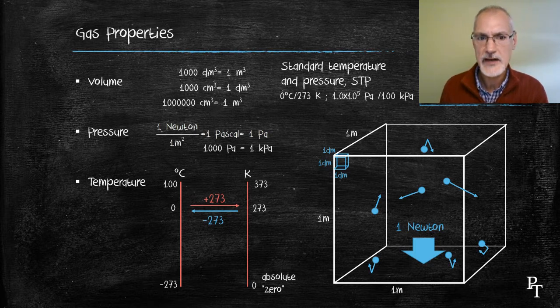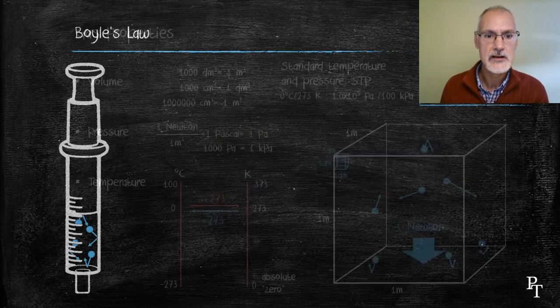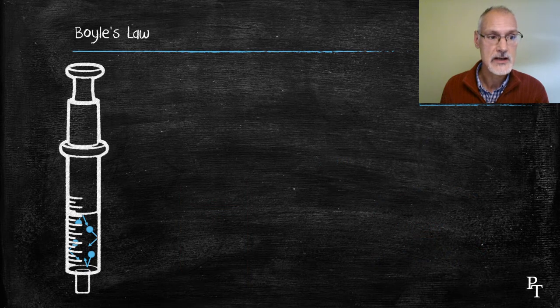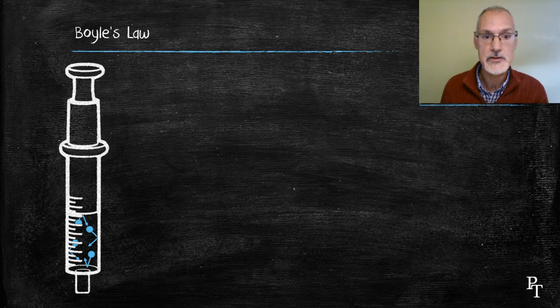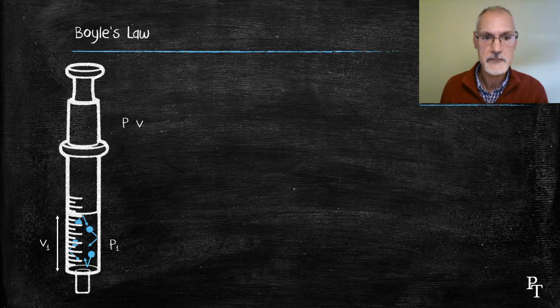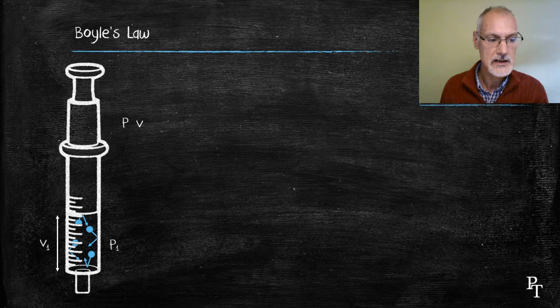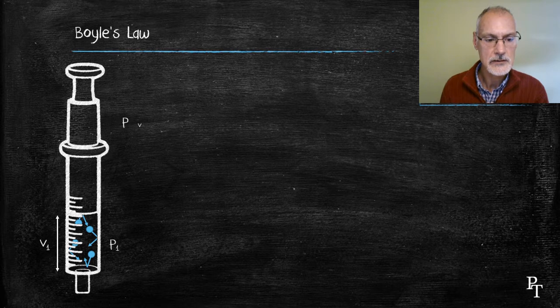Let's look at how a fixed mass of gas behaves to stresses or different changes. Boyle studied the connection between pressure and volume while keeping the temperature the same. Here I have a syringe with a fixed amount of gas in it. It occupies a certain pressure and has a certain volume. If I take that and I make the volume smaller, how does this pressure respond?